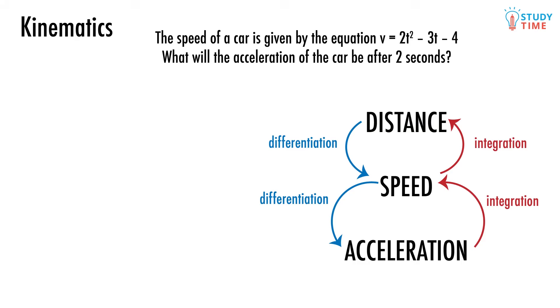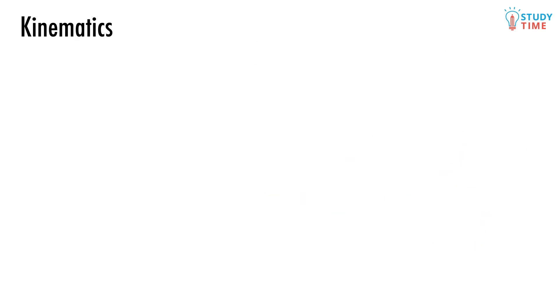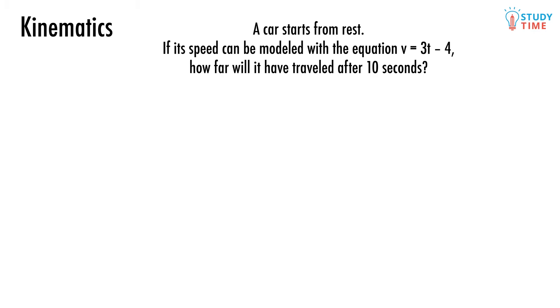Let's look at a different question involving integration. A car starts from rest. If its speed can be modeled with the equation v equals 3t minus 4, how far will it have traveled after 10 seconds? We'll begin with a simple integration of the equation for speed. Distance equals the integral of 3t minus 4 dt equals 3/2 t squared minus 4t plus c.